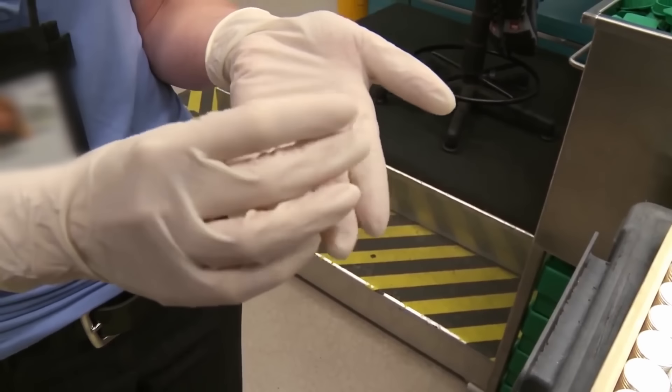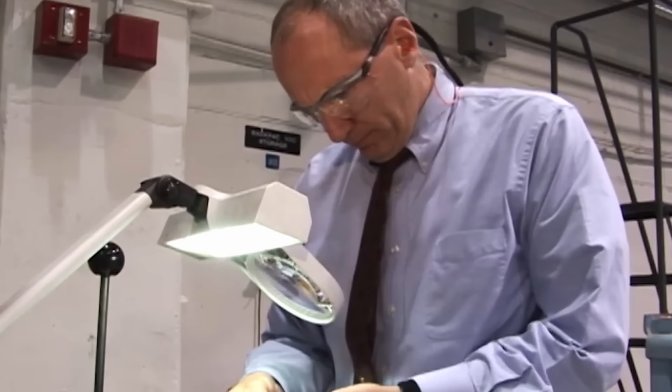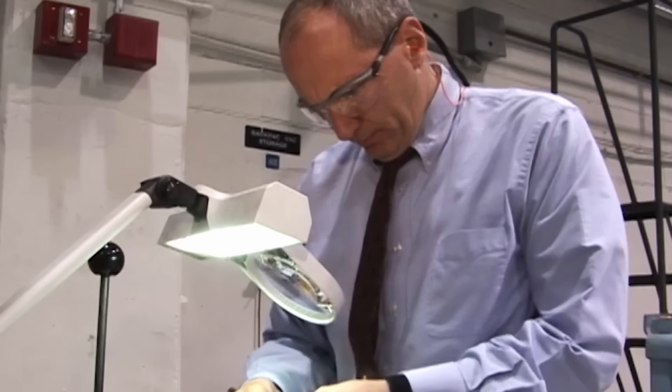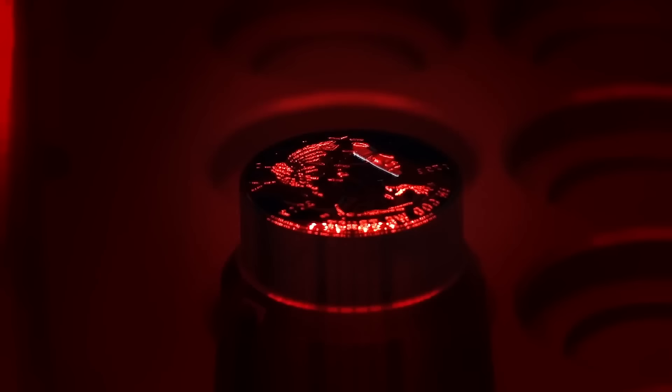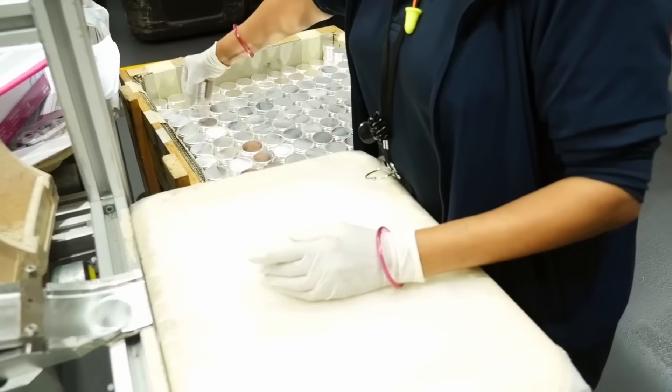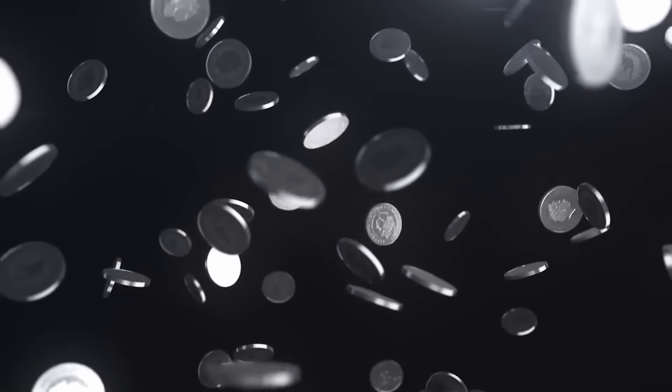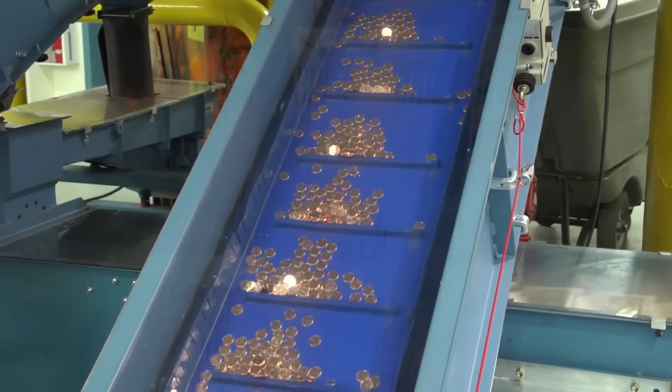Silver coins are a type of currency minted using silver as the primary metal. These coins hold both monetary value and inherent worth due to the precious metal they contain. Throughout history, silver coins have played a significant role in trade, commerce, and wealth preservation. Beyond their practical uses, silver coins hold cultural and historical significance. They reflect the artistry and craftsmanship of the minting process and often depict important moments or figures from a nation's history.